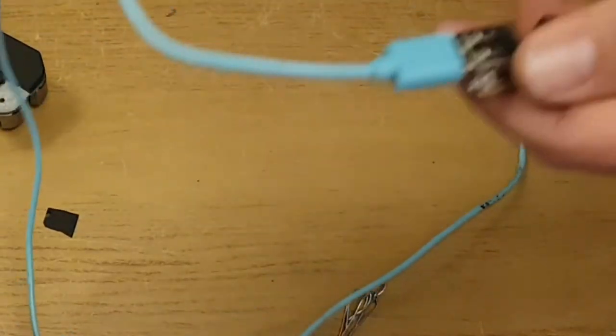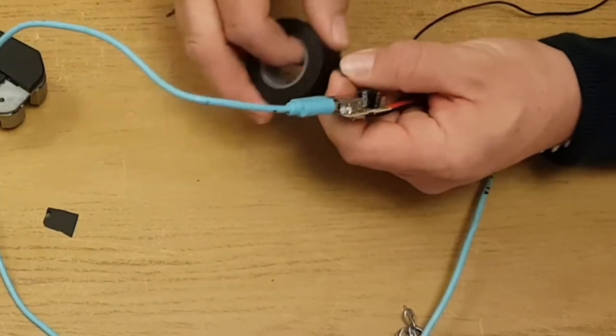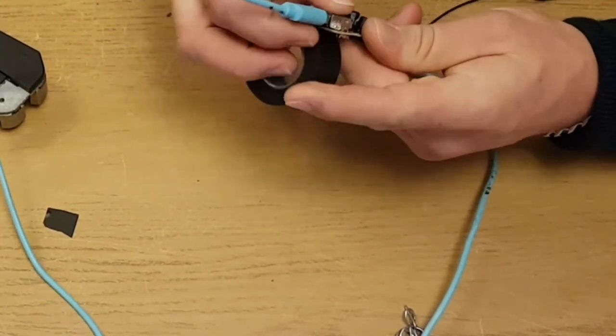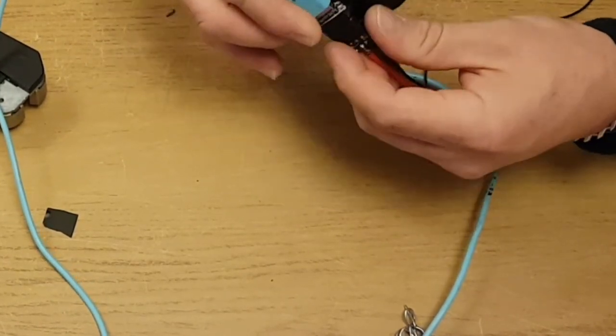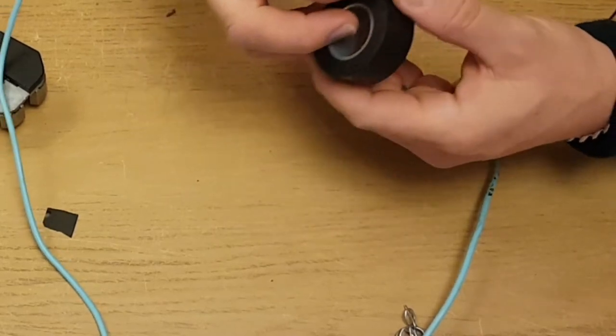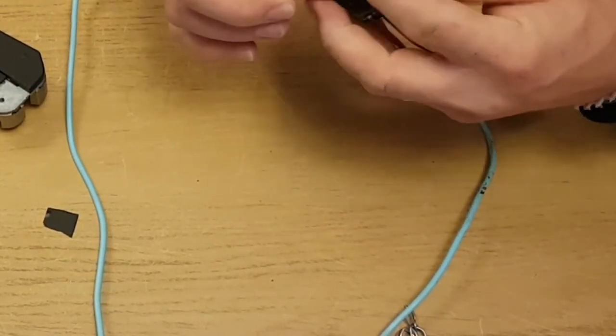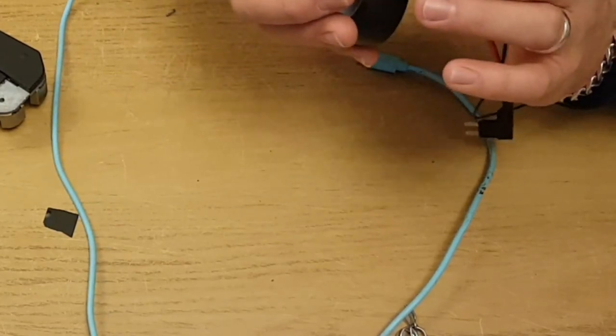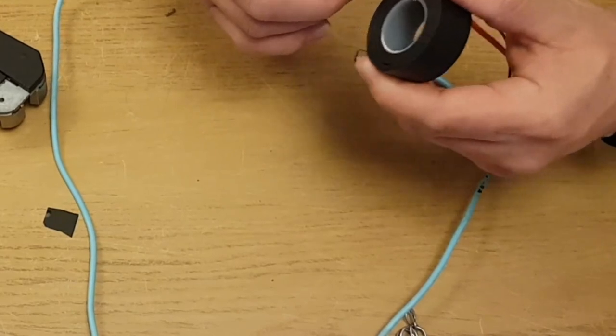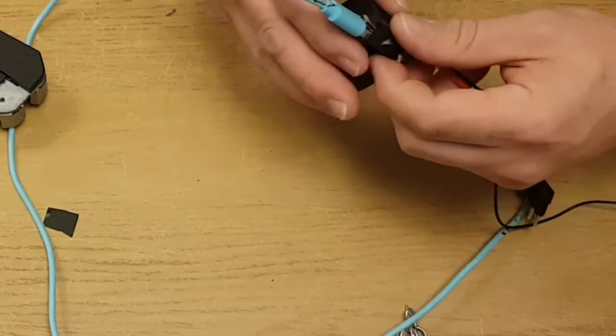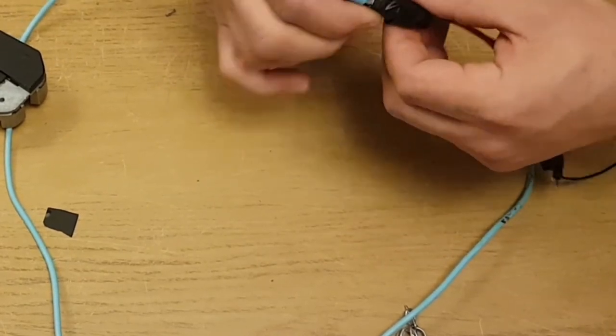We're going to get some electrical tape, we're just going to wrap this all up in lots and lots of electrical tape, making sure that nothing is protruding from the bottom of the circuit board.